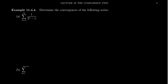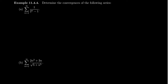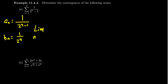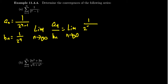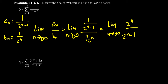Let's see some examples of using the limit comparison test. Take the series that started this whole conversation: the sum from n equals 1 to infinity of 1 over 2 to the n minus 1. We look at sequence a_n equal to 1 over 2 to the n minus 1, and the sequence we want to compare it to, b_n equal to 1 over 2 to the n — we just want to ignore the negative 1. If we take the limit as n goes to infinity of a_n over b_n, this is the limit of (1 over 2 to the n minus 1) divided by (1 over 2 to the n). You have a fraction divided by a fraction, and you could notice this has the indeterminate form infinity over infinity.